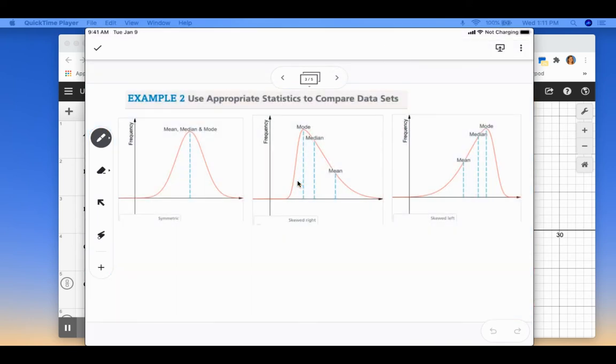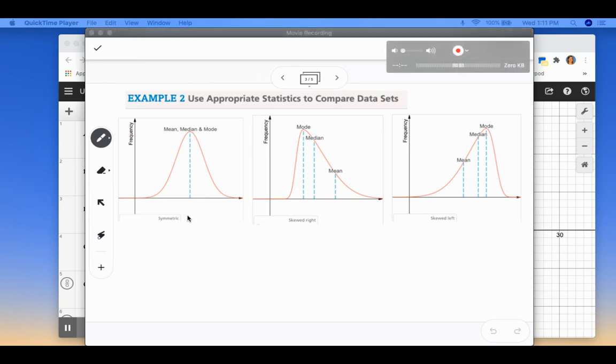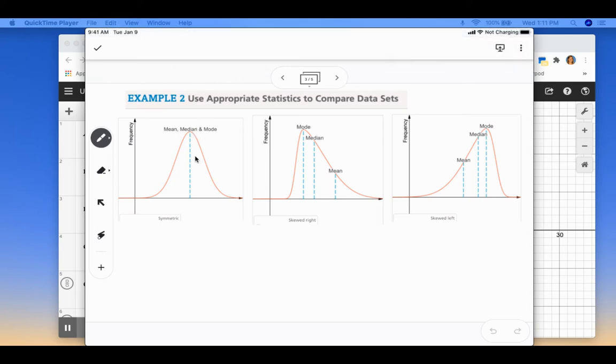So our next thing is talking about using appropriate statistics to compare data sets. If we have a curve of our data, we could have symmetric. So you can see that this is a symmetric curve. And you'll notice that the mean, the median, and the mode would all be close to the same value. So if that's the case, the best appropriate statistics to use as a measure of center and spread would be to use the mean and the standard deviation.